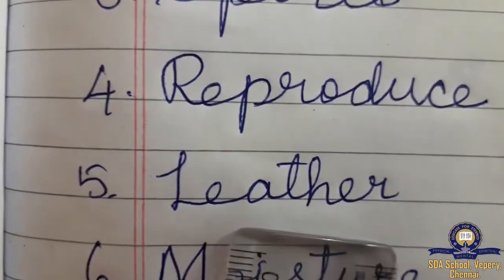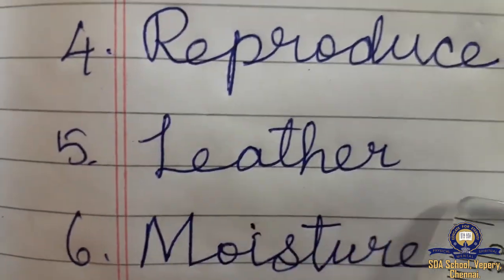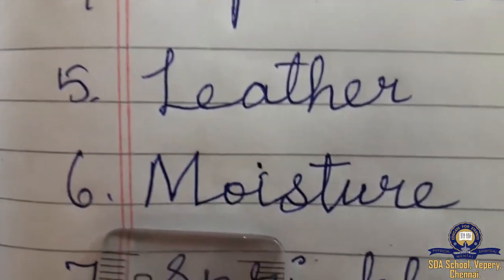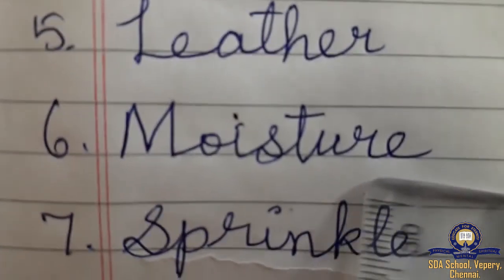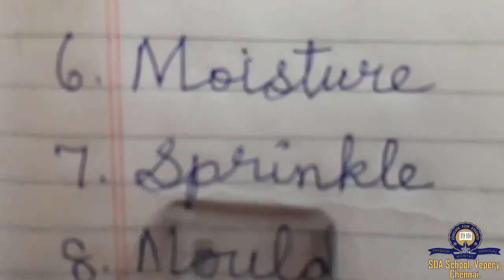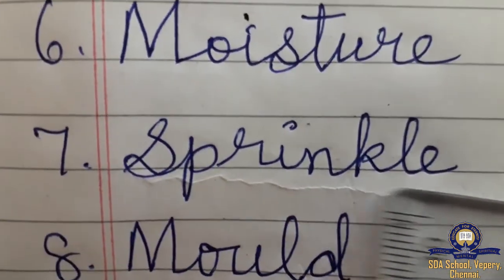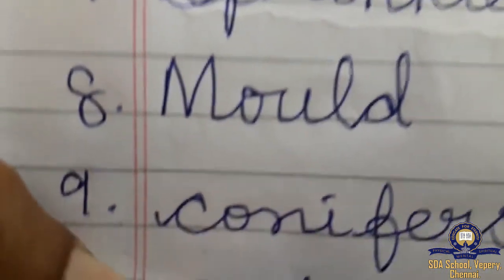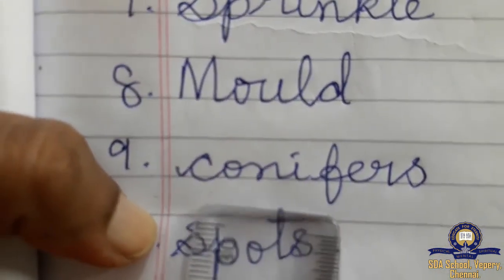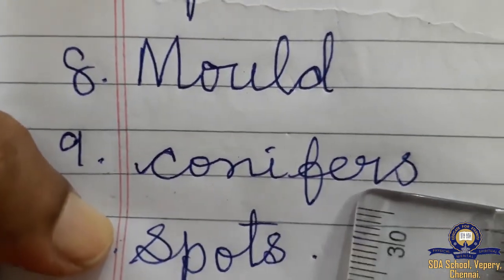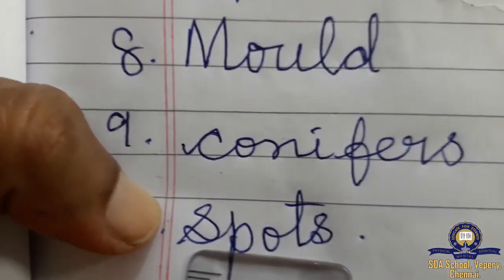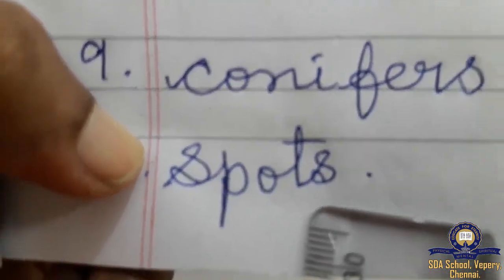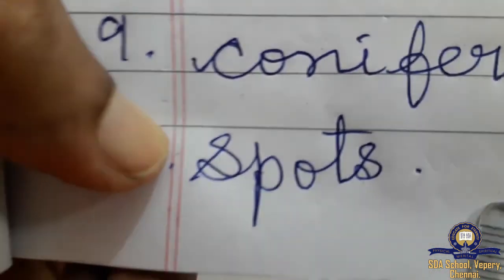Leather — L-E-A-T-H-E-R. Moisture — M-O-I-S-T-U-R-E. Sprinkle — S-P-R-I-N-K-L-E. Mold — M-O-U-L-D. Conifers — C-O-N-I-F-E-R-S. Spots — S-P-O-T-S.